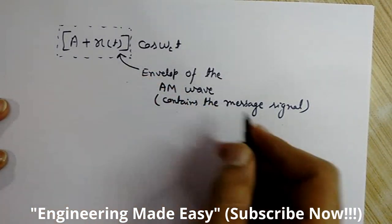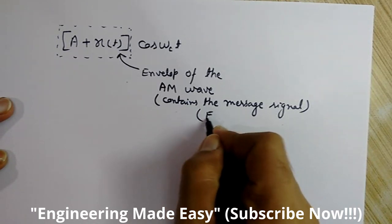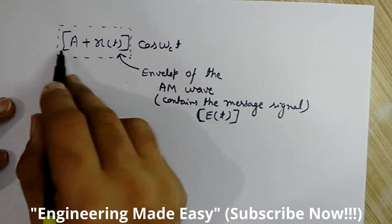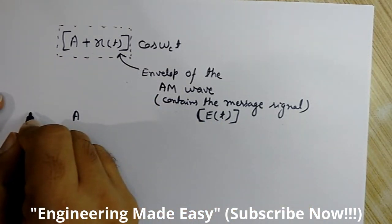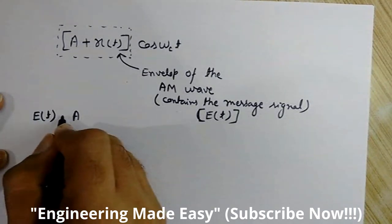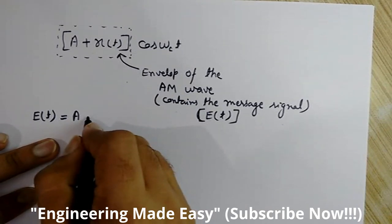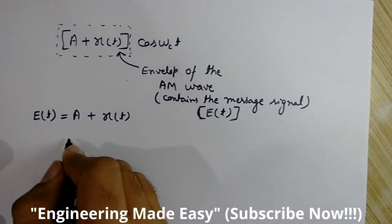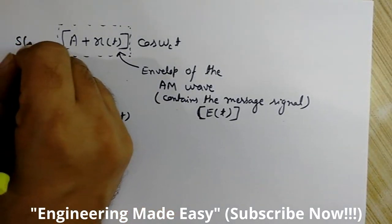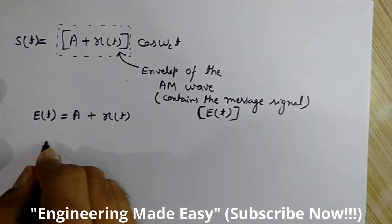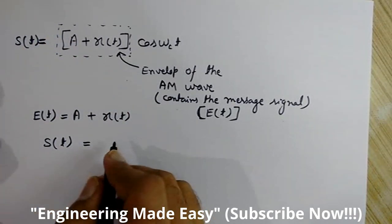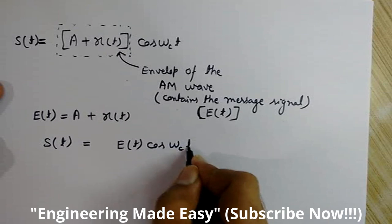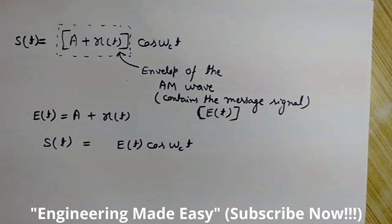Let's call the envelope e(t), where e stands for envelope. I have defined e(t) = A + x(t). So I can write down the equation of the amplitude modulated wave as s(t) = e(t)·cos(ωc·t).